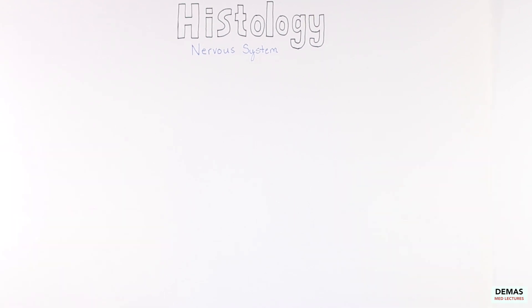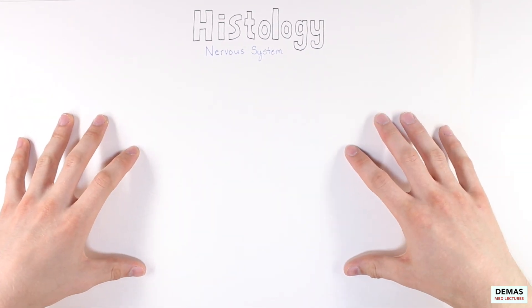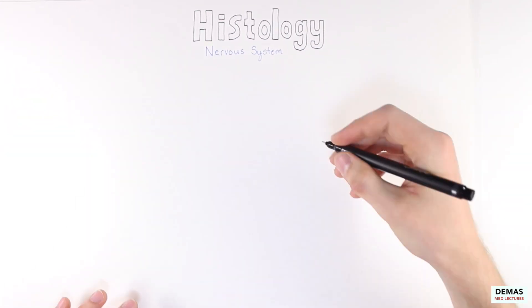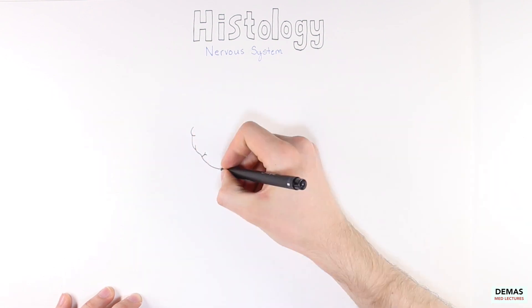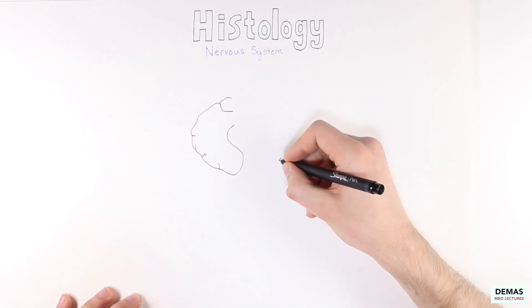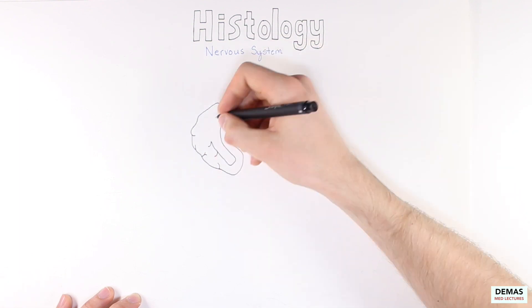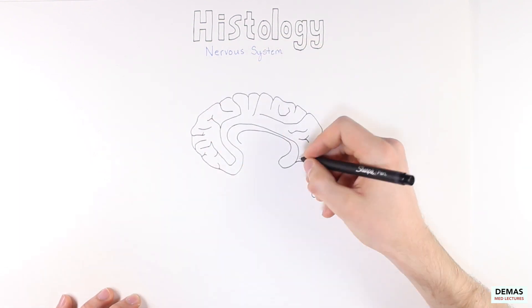We are going to be focusing on the central nervous system primarily during this lecture, which includes the brain and the spinal cord. I will start by drawing a mid-sagittal or medial slice of the brain and the spinal cord to reveal its inner structures.